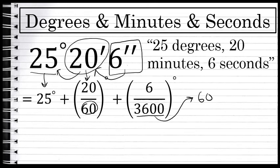Because it is a 60th of a minute which is a 60th of a degree, to write seconds as a single fraction in the unit of degrees, I have to multiply 60 times 60. That's where the 3600 comes from - 60 times 60. 6 seconds is a 60th of a minute which is a 60th of a degree.